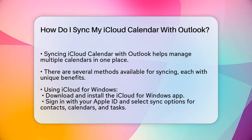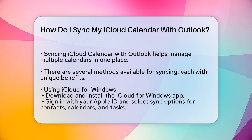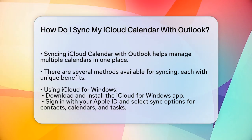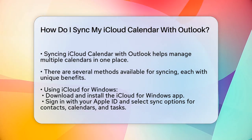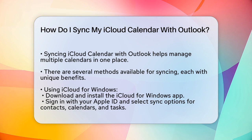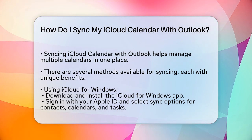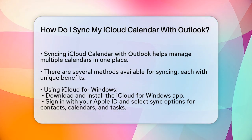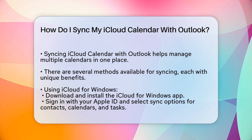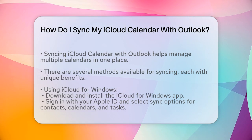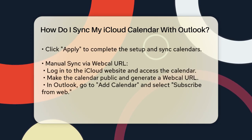Download and install the iCloud for Windows app from Apple's website. Open the app, sign in with your Apple ID, and select the options to sync your contacts, calendars, and tasks with Outlook. Click Apply and follow the prompts to set up the connection.